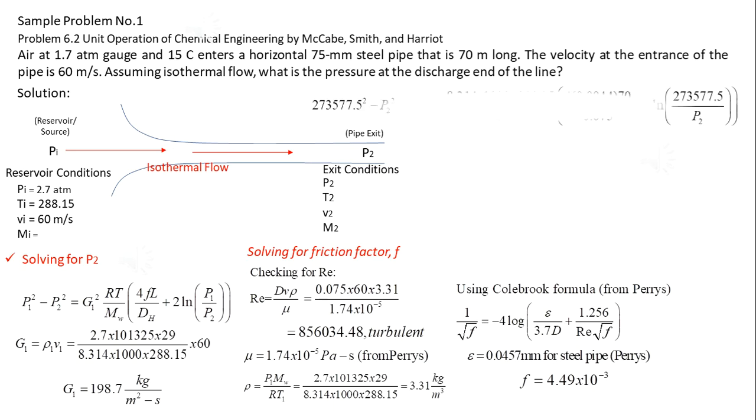Substitution of the variables into the equation, and calculating for exit pressure P2, we have P2 equals to 122,106.10 pascals absolute, equals to 1.21 atmosphere absolute.